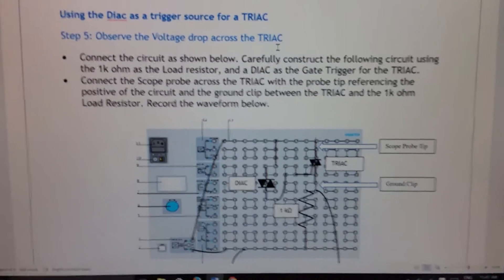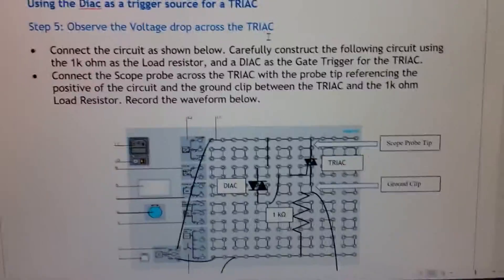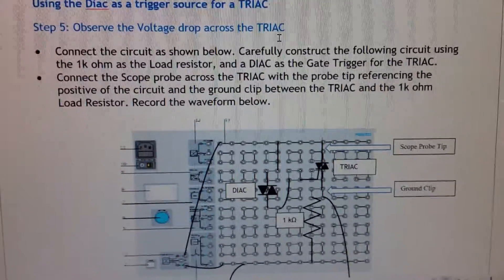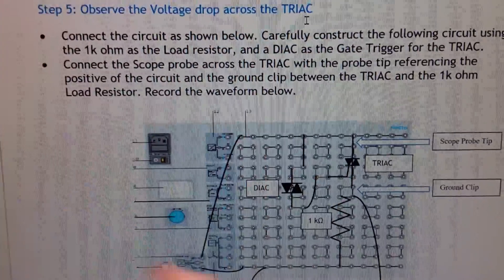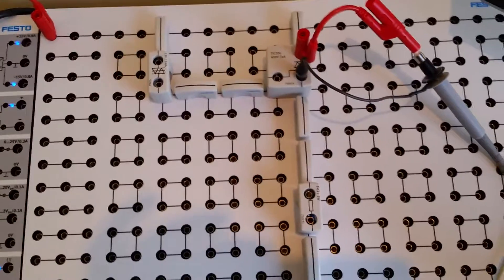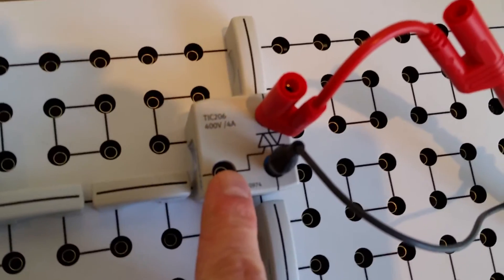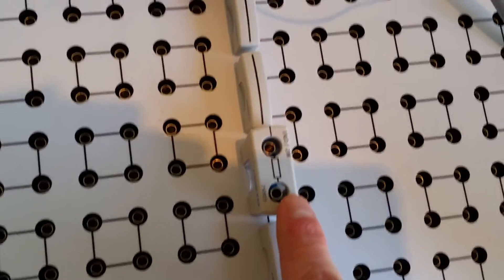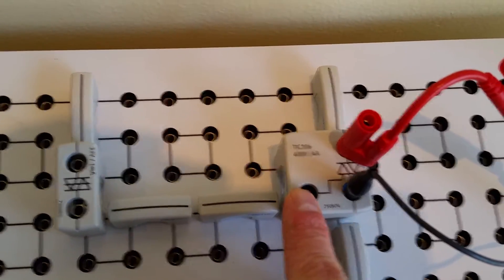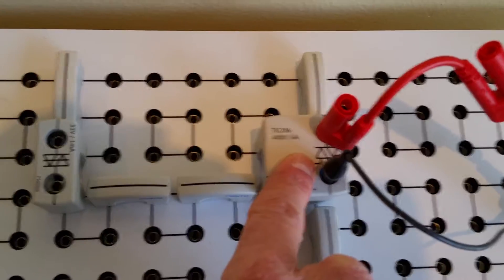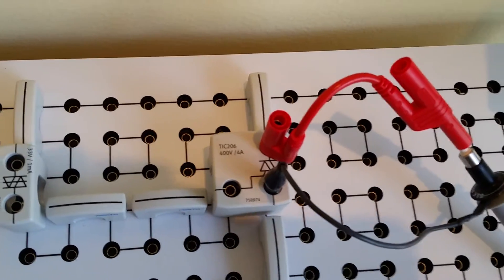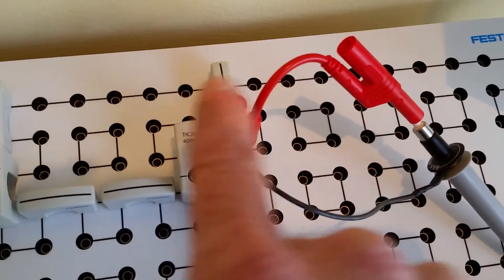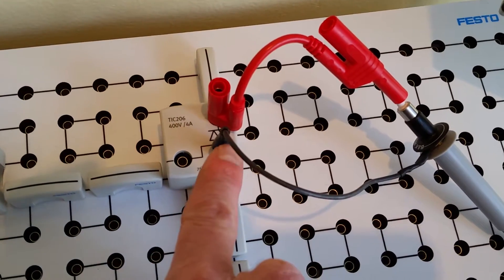Next we're going to use the diac as a trigger for the triac. It's the exact same circuit as before but we're taking out the SCR and replacing it with the triac — same load, same diac. The only thing that's changed is I've placed the triac in line with the load rather than the SCR. Remember that the triac is like two SCRs back to back, so the diac is going to fire it in both the positive and the negative portion of the waveform.